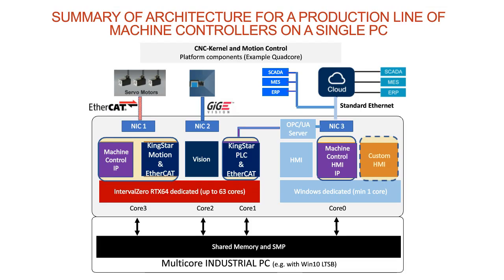Here's a summary of the architecture. In red you've got Interval Zero RTX, Kingstar Motion, Machine Control IP — your own custom programs — Vision, Kingstar PLC, all running EtherCAT. We also offer a soft PLC for people used to programming PLCs: structured text, ladder diagrams, function blocks. Over on the Windows side you've got your own HMI — write things in C# or C++. There's a whole host of different options available.